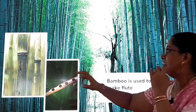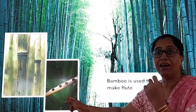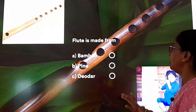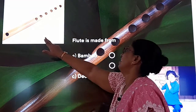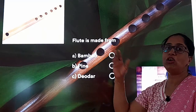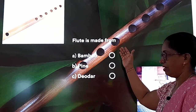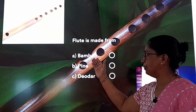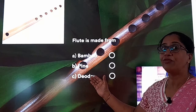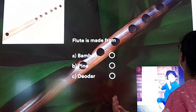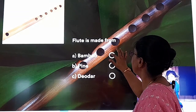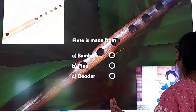Yes, this is the picture of the flute — woh kisse banta hai? Bamboo! So bamboo is used to make flute — flute yane basuri. Now let me ask you the question: flute is made from — flute kisse banta hai? Read the options: bamboo, pine, deodar. These are all tree names. So which will you tick? Yes, the correct answer is bamboo!